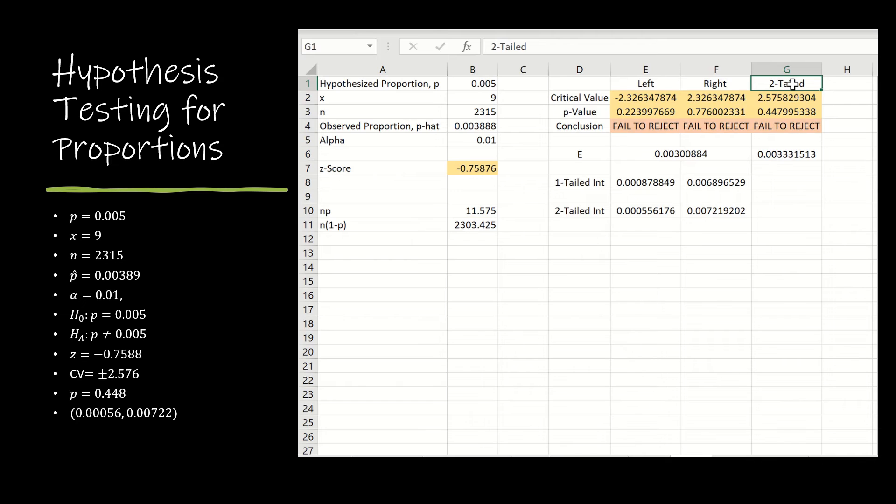For a two-tailed test, the critical value, remember, is alpha divided by 2 because we have to split alpha into each tail. So I'm taking norm.s.inv of 1 minus alpha over 2, and I did that so that it's positive. If I just did alpha over 2, that would give me a negative value and I'd have to use the absolute value function to make it positive.